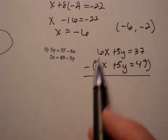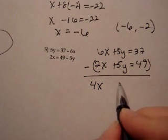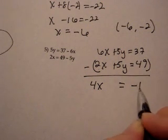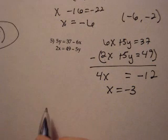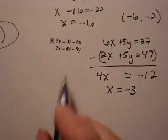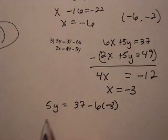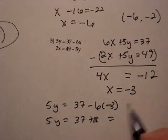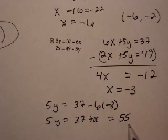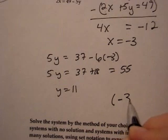We can handle this in our heads. We're going to get 4x. The y's go away. 37 minus 49, so that will equal negative 12. So x equals negative 3. And now I've got to figure out what y is. Let's use the first equation. 5y equals 37 minus 6 times negative 3. So 5y equals 37 plus 18. What's 37 plus 18? 55? Yeah, I think it is. And so y equals 11. So the answer, the ordered pair is negative 3, 11.